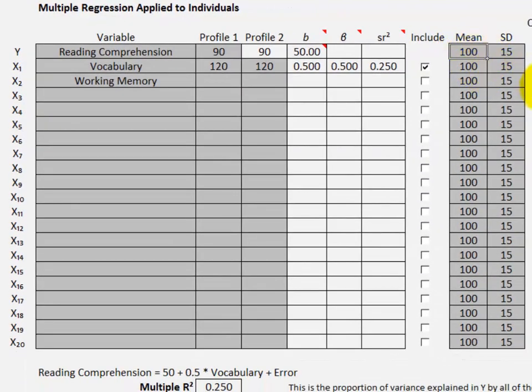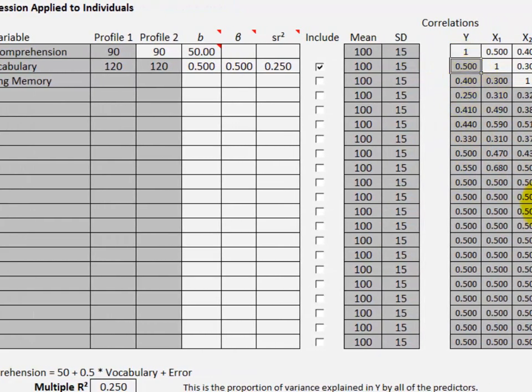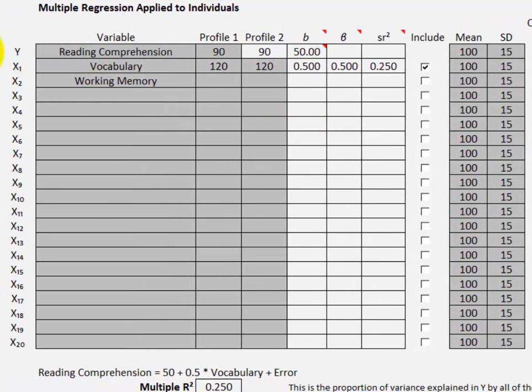Both variables have a mean of 100 and a standard deviation of 15. The correlation between X and Y is 0.5. The first variable is always the criterion variable and the other variables are the predictor variables. You must apply the means and standard deviations of all variables and the correlations between the predictors and the criterion variable.